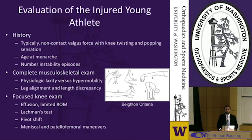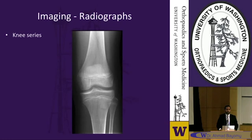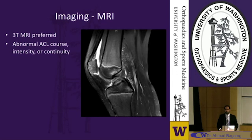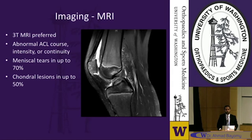All patients should have a complete knee series when presenting. In select patients, depending on age or presentation, you can consider obtaining standing full-length films as well as a PA of the left hand, which you can reference against the Greulich-Pyle Atlas or shorthand methods to determine bone age relative to chronologic age. For advanced imaging, an MRI is obtained — 3 Tesla magnets are shown to be more sensitive in determining ACL injuries in children. You may see fiber discontinuity, an abnormal course, or a change in signal intensity. In children, we see meniscal tears in up to 70% of those with complete ACL ruptures and chondral lesions in up to 50%.